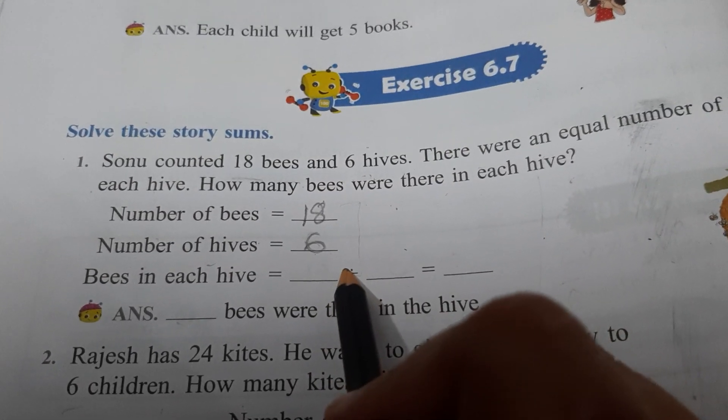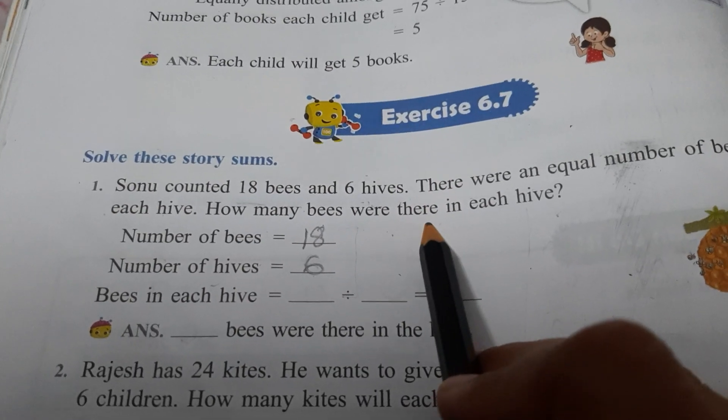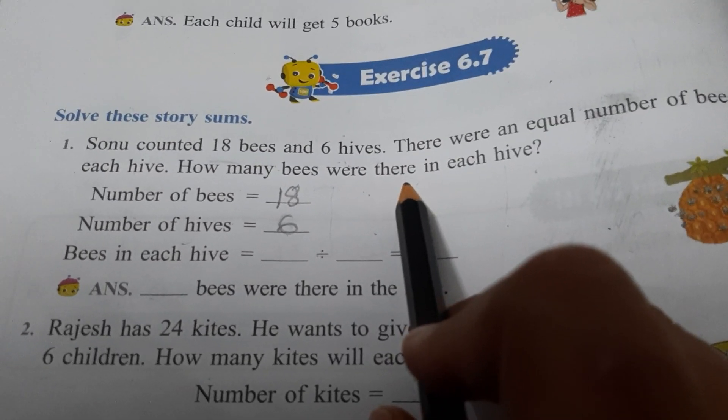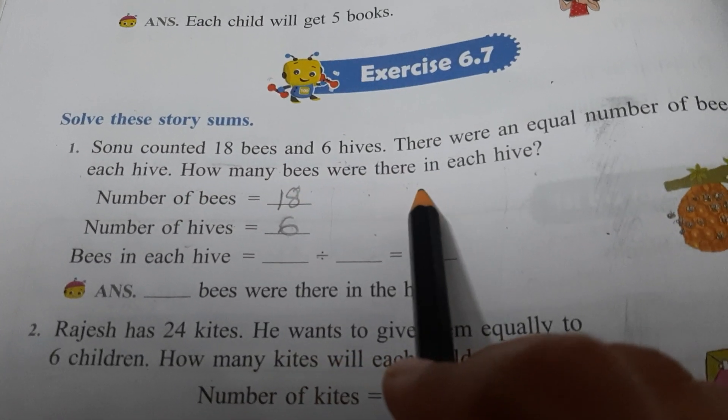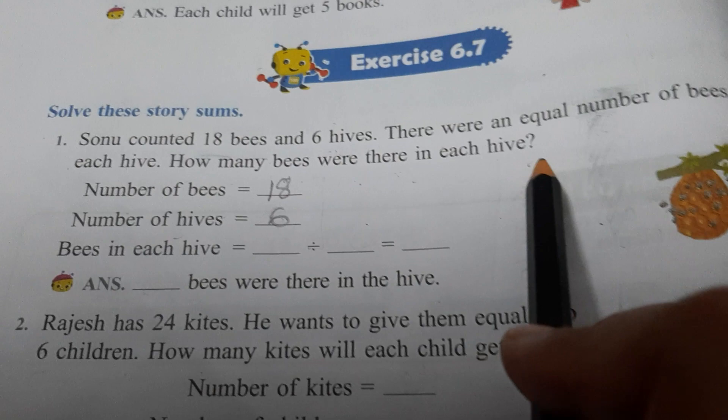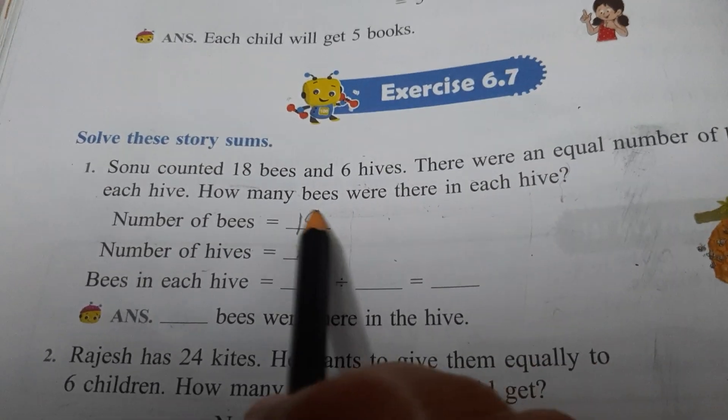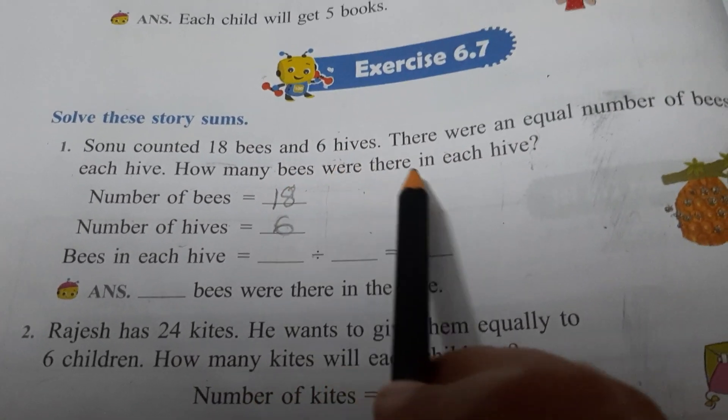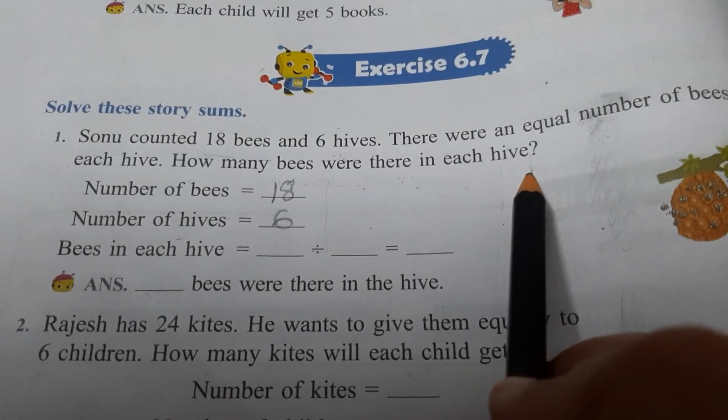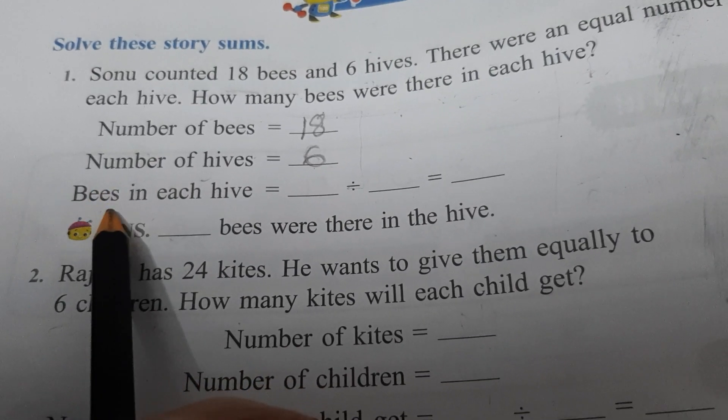After writing the given values, our next focus should be on what we have to find. Now what we have to find? How many bees were there in each hive? With question mark. It means this we have to find. What we have to find? Number of bees in each hive. So this will be our third line. Number of bees or simply you can write bees in each hive.